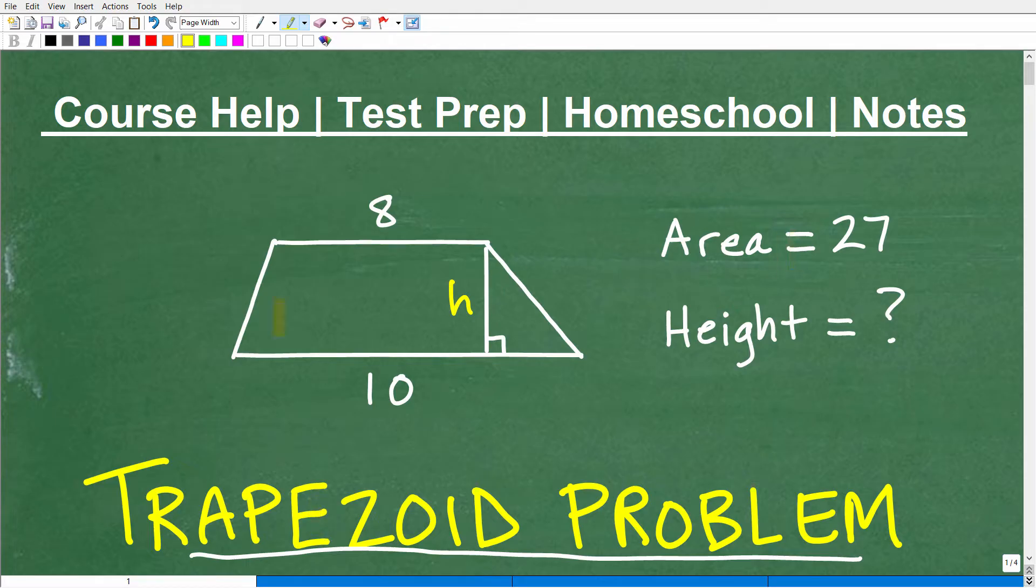So the problem is that this particular trapezoid has an area of 27. It could be 27 square inches, 27 square centimeters. It does make a difference, but it's units squared. And this side of the trapezoid is 8, and this side is 10, and we want to find the height. What is the height of this trapezoid given this information? Okay, so you're going to need two things to solve this problem.